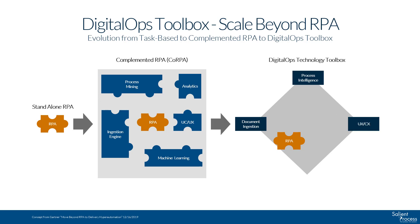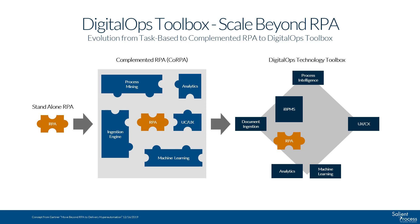User and customer experience are more important than ever and need to be combined with your automation efforts to make sure you aren't doing things faster but somehow creating worse experiences for your customers. Analytics and machine learning will be ubiquitous and applied across all of these tools. An Intelligent Business Process Management Suite, or IBPMS, is your overall process execution and orchestration platform. With more sophisticated processes, we just don't see how you can avoid using some sort of process execution engine. As businesses move faster and faster, modeling and automating decisions to make sure you are making the right decisions at the speed of digital will become more and more relevant. An integration platform as a service, or IPaaS, is the platform to accomplish integration across heterogeneous systems.